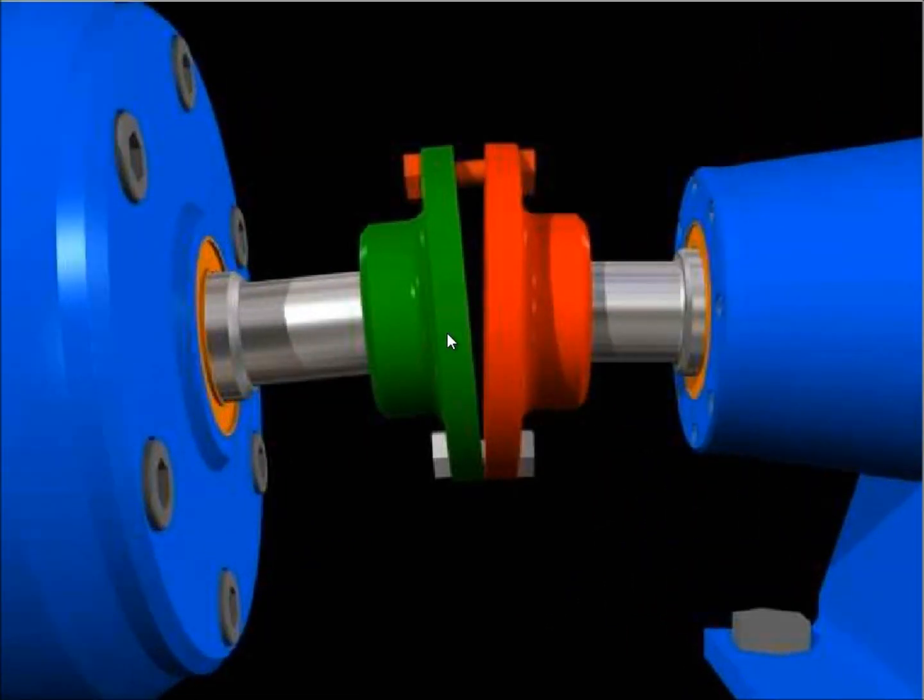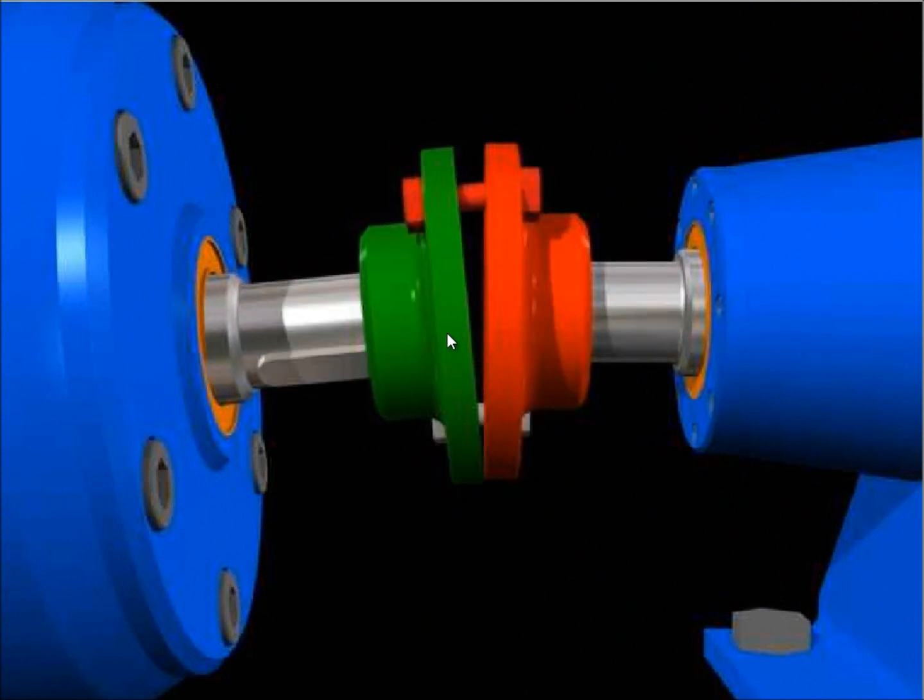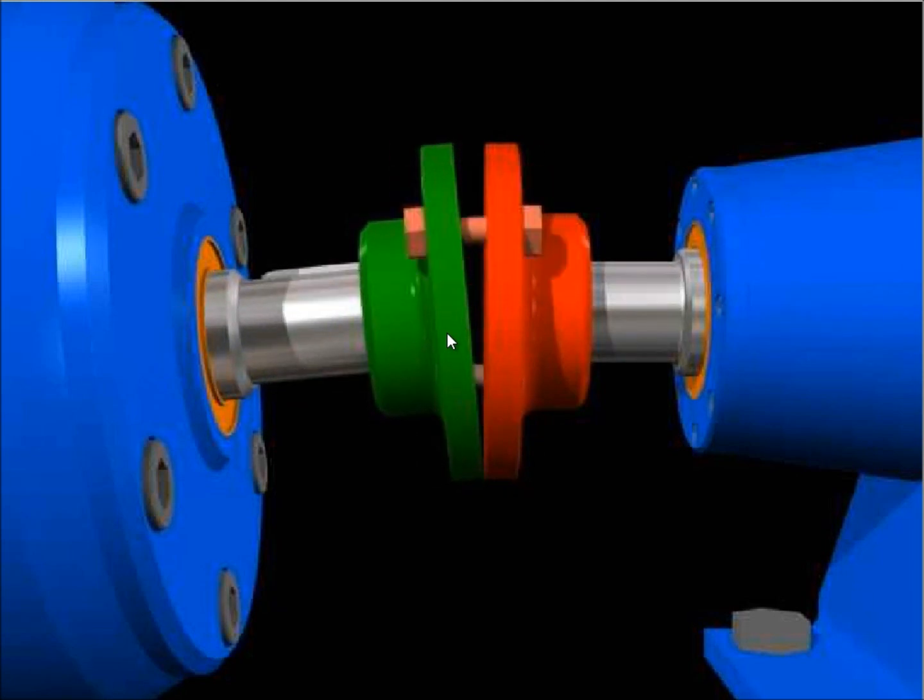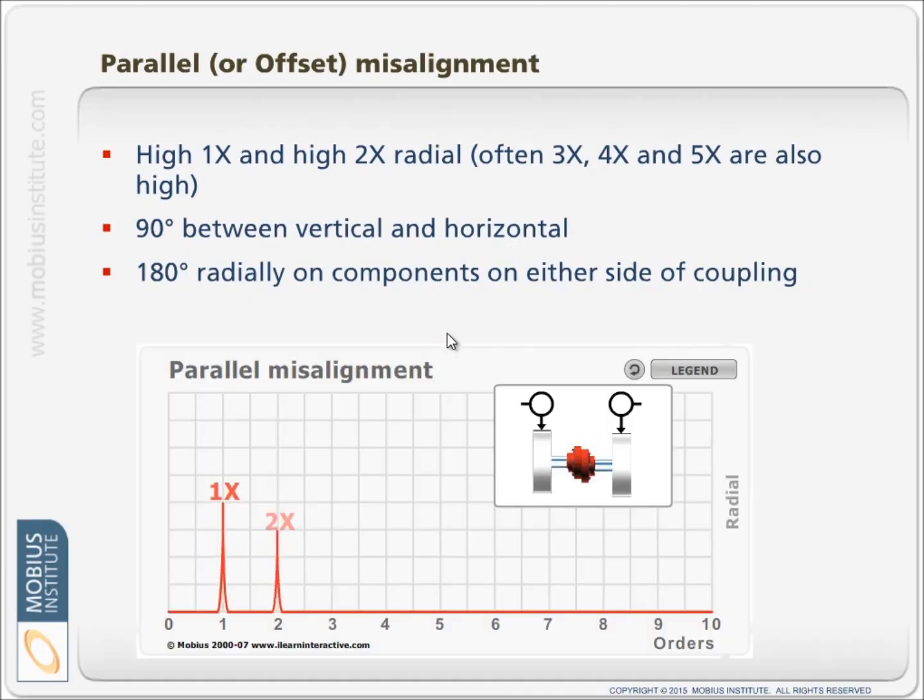And if we have angular misalignment, we've closed that gap by attaching the couplings, and now we've put stress on all those components again. So, what do we see?